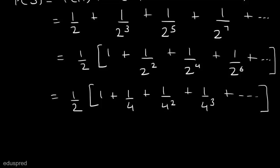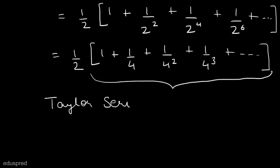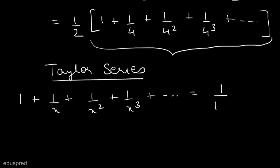Now we need to solve this equation to find the answer. To solve this part of the equation we can use the geometric series formula, which states that 1 + 1/x + 1/x² + 1/x³ + ... = 1/(1 - x), where the value of x is between -1 and 1.